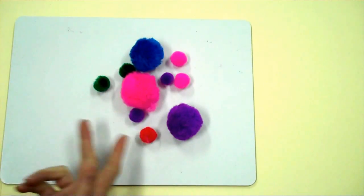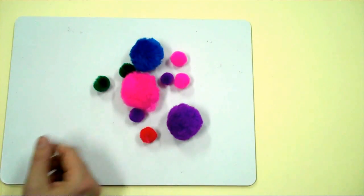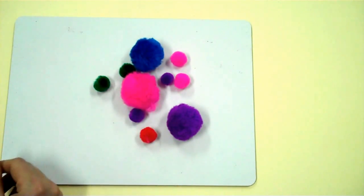First, I need to think about the attributes of my objects that I've selected. So what attributes do these pom-poms have? Well, they come in different colors and they come in different sizes.